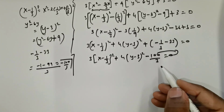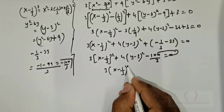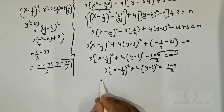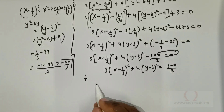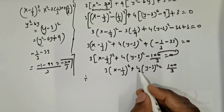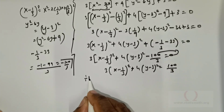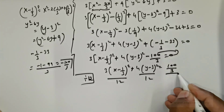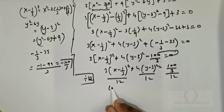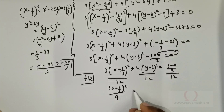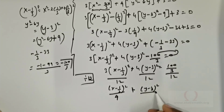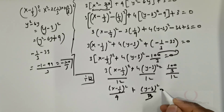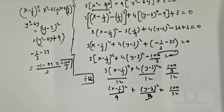So 3(x − 1/3)² + 4(y − 3)² = 100/3. Dividing both sides by 12: (x − 1/3)² / 4 + (y − 3)² / 3 = 100/36.